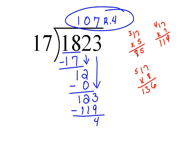Now remember, we can check this. We can multiply 107 times 17 and see if we get close. So let's see, 7 times 7 would be 49. 7 times 0 would be 0, plus 4 is 4. 7 times 1 is 7. And then we multiply the 1 times each of the digits.